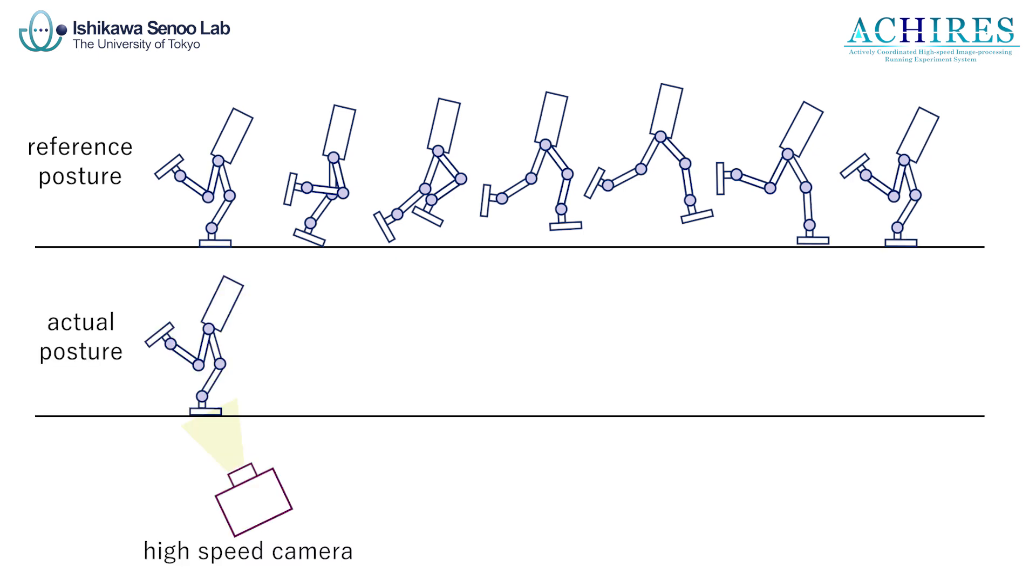The posture information acquired from the camera is fed back to the motion in real time in order to control the actual robot posture into the reference posture.